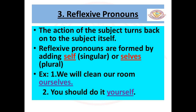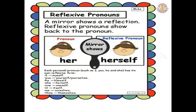Third, reflexive pronouns. The action of the subject turns back onto the subject itself. Reflexive pronouns are formed by adding 'self' to the singular or 'selves' to the plural. Example one: we will clean our room ourselves. Example two: you should do it yourself. In the first sentence, we used 'ourselves' because 'we' is plural. In the second sentence, we used 'yourself' because 'you' is singular. A mirror shows a reflection, and reflexive pronouns show back to the pronoun. Here, the girl is standing in front of the mirror — the mirror shows 'herself', the reflexive pronoun.